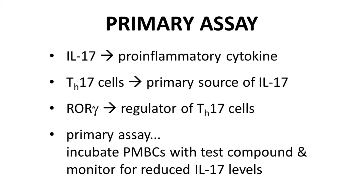The results and discussion section opens with mention of the primary assay used to screen for active compounds. The primary assay focuses on IL-17, interleukin-17, which is a pro-inflammatory protein produced by T helper 17 cells. The assay involves incubation of PBMCs — peripheral blood mononuclear cells, which include T helper 17 cells — with test compounds, then monitoring for IL-17 levels. Compounds with lower IL-17 levels are presumably inhibiting ROR gamma and suppressing IL-17 release.